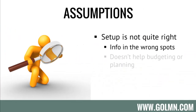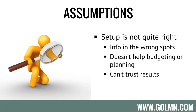It's a safe assumption that most landscape companies don't have a P&L that really works for them. It may help with tax reporting, but it doesn't give you the information you need to manage your company. Information could be in the wrong spots; it rarely helps with budgeting, planning, or forecasting. In many cases owners can't trust the results or don't even understand what numbers are going in where or where things are showing up in the P&L.